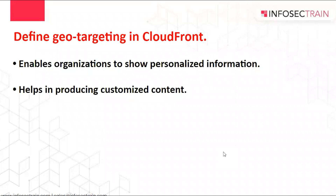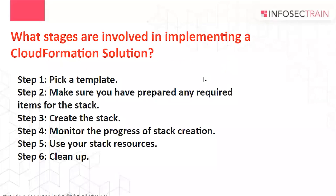Define geo targeting in CloudFront. Geo targeting enables organizations to show personalized information and helps in producing customized content. By using Amazon CloudFront, we can detect the country from where end users are requesting our content. This information can be passed to our origin server by Amazon CloudFront. Based on different countries, we can generate different content or different versions of the same content. In this way, we are able to target our end users based on their geographical locations.